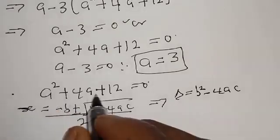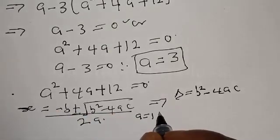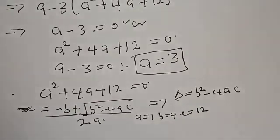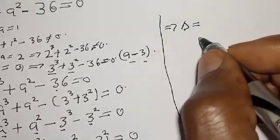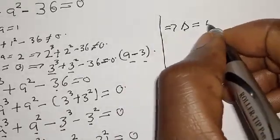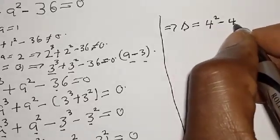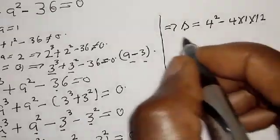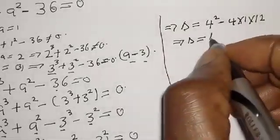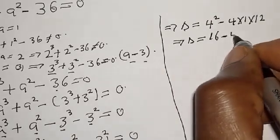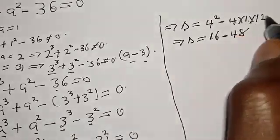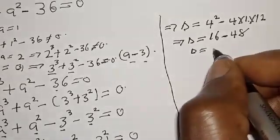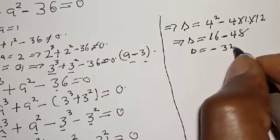This implies that our discriminant D is equal to B squared minus 4AC. From here, our coefficient A is 1, B is equal to 4, and C is equal to 12. This implies that D equals 4 squared minus 4 times 1 times 12, which is 16 minus 48, that is 48. And our D is equal to minus 32, which is negative.